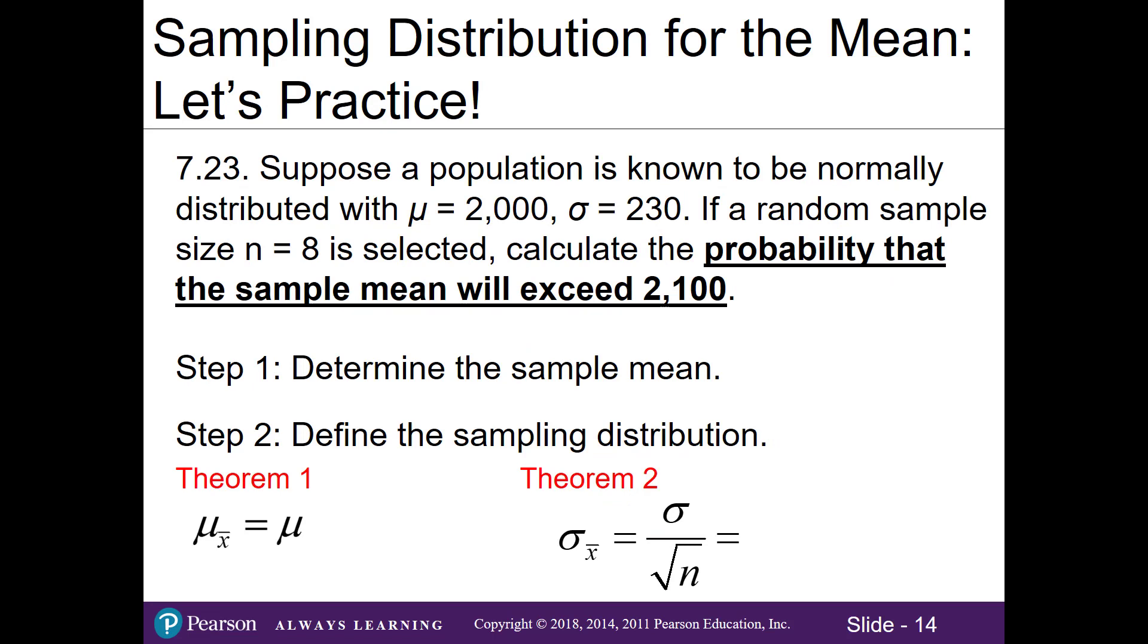Let's look at problem 23, very similar to the homework problem. Suppose a population is known to be normally distributed, bell-shaped, with a population mean of 2,000 and a population standard deviation of 230. If a random sample size of 8 is selected, calculate the probability that the sample mean will exceed 2,100. In other words, we want greater than 2,100. In step one, we want to determine the sample mean we're interested in. We want a sample mean that exceeds 2,100, so x̄ is going to be 2,100.